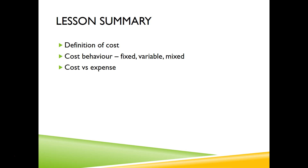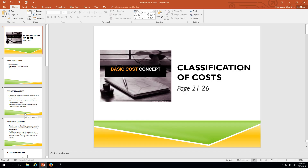To summarize: I've defined cost as the monetary sacrifice of something of monetary value for a certain use. I've shown the graphs for fixed, variable, and mixed cost both in total and per unit. And I've differentiated cost and expense for you. That's all.